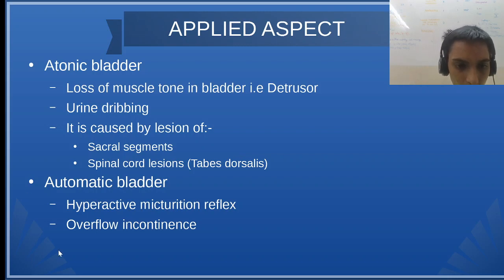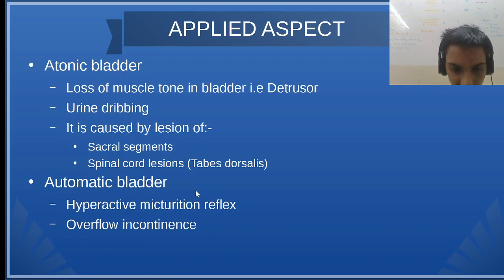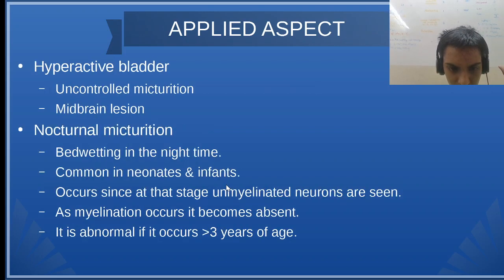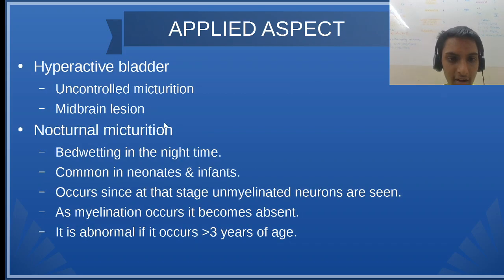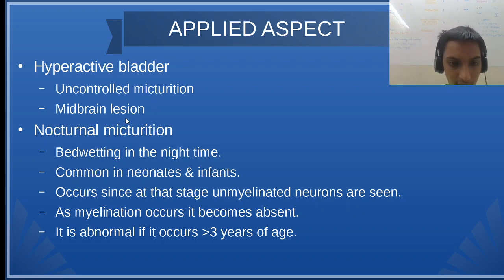Automatic bladder involves a hyperactive micturition reflex, leading to overflow incontinence. Hyperactive bladder involves uncontrolled micturition, possibly due to a mid-brain lesion.